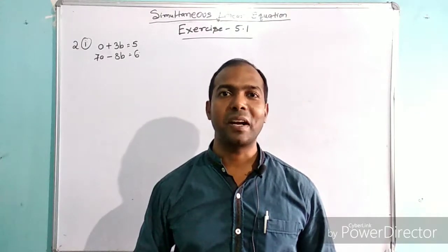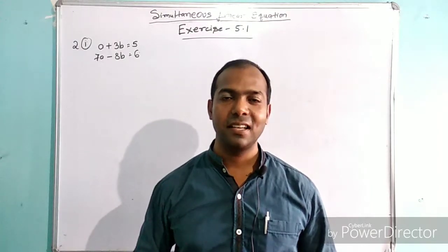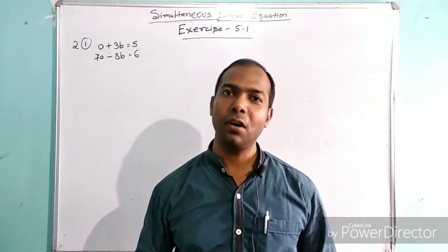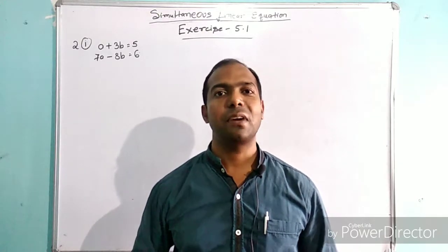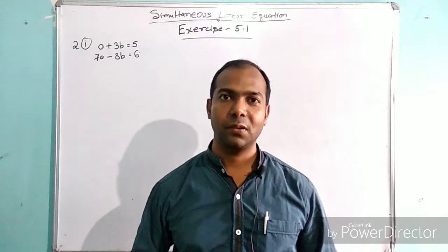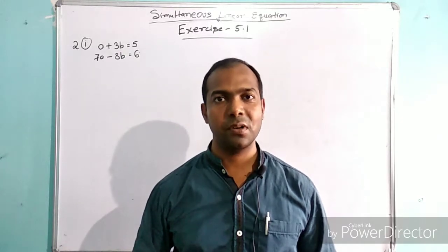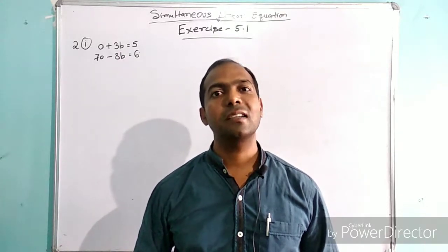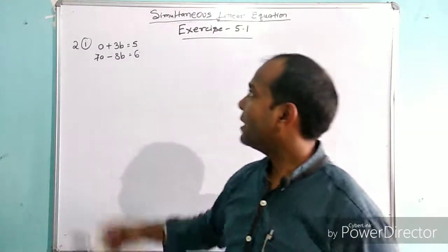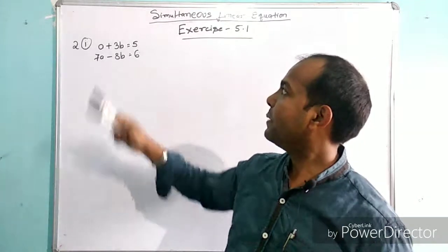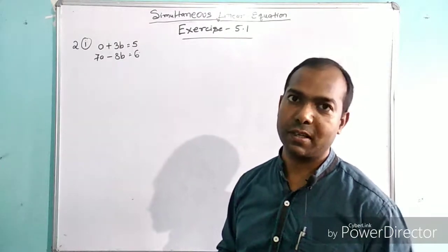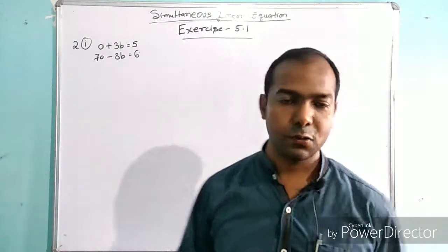Hello again students, my name is Bhaskar and today we're going to solve question number 1 from Exercise 5.1 of M.L. Aggarwal. The chapter is Simultaneous Linear Equations for Class 9. We have: a plus 3b equal to 5, and 7a minus 8b equal to 6.